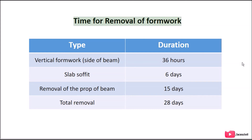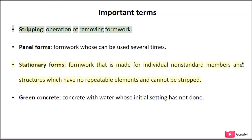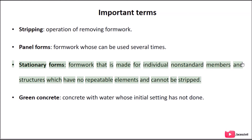Time for removal of formwork: Vertical formwork and sides of beam: 36 hours. Slab soffit: 6 days. Removal of props of beam: 15 days. Total removal: 28 days. Important terms: Stripping is the operation of removing formwork. Panel forms are formwork that can be used several times. Stationary forms are formwork made for individual non-standard members and structures which have no repeatable elements and cannot be stripped.